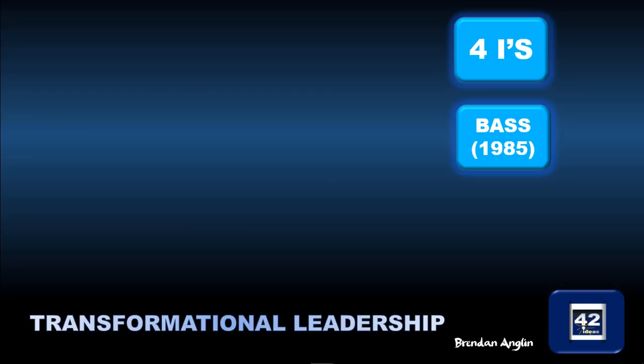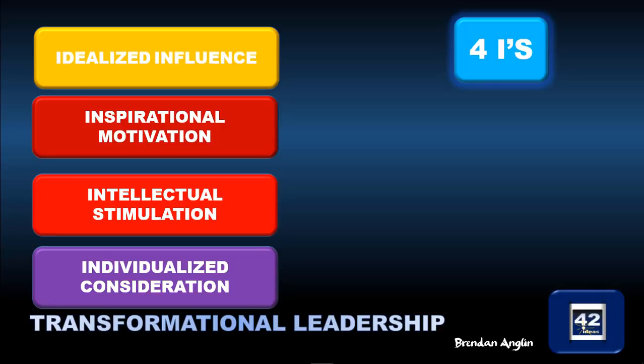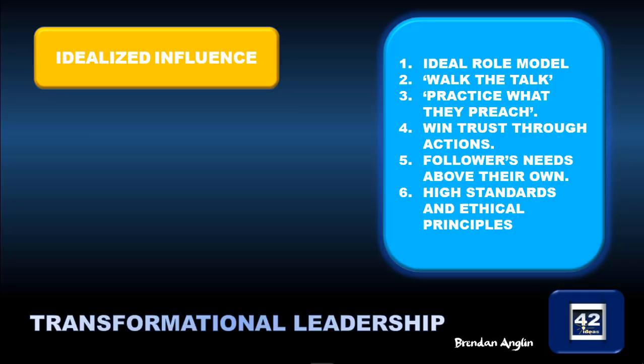The four I's as laid out by Bass in 1985 are about transformational leadership: idealized influence, inspirational motivation, intellectual stimulation, and individualized consideration. The first — idealized influence — is where the leader creates an ideal role model by walking the talk and practicing what they preach. As a result, they win the trust of their followers through their actions, put their followers' needs above their own, and establish high standards and ethical principles. This is where the moral element of a transformational leader comes into play.